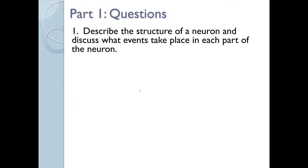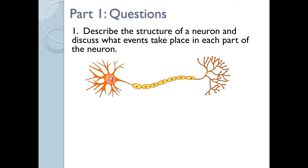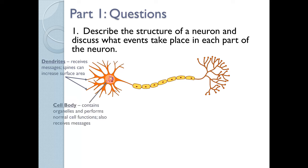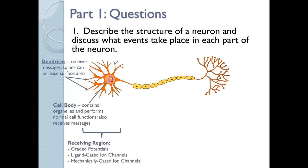Question one: describe the structure of a neuron and discuss what events take place in each part of the neuron. We'll use a clip art drawing of a neuron to label the different parts. First, we have the dendrites — these receive messages. They can have little extensions called spines that increase the surface area. Then you also have the cell body, also known as the soma, which contains organelles and performs normal cell functions. The cell body can also receive messages.